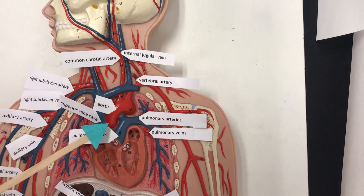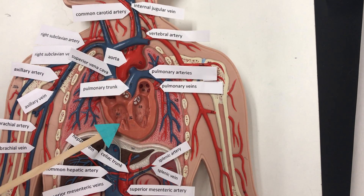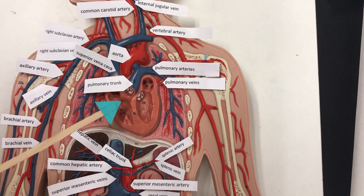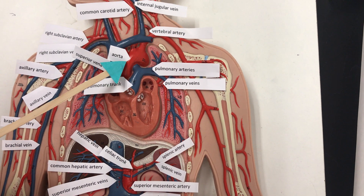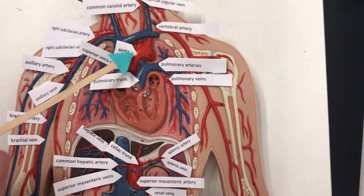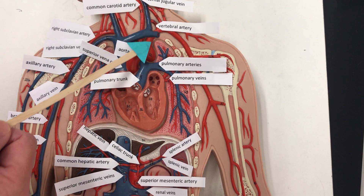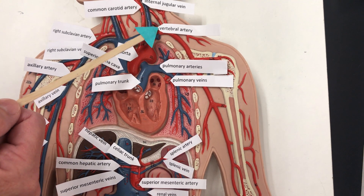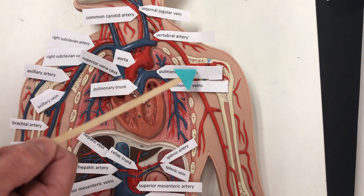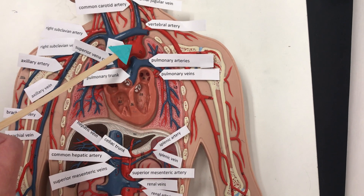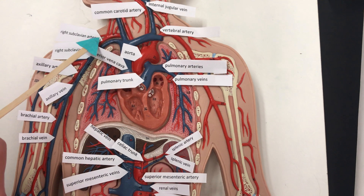We have the heart. Blood is pumped out of the heart through the aorta — it's the largest artery in the body — and then it branches. Here's the vertebral artery, and then it's going to branch also to the right side.